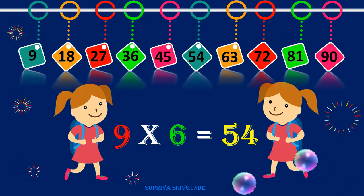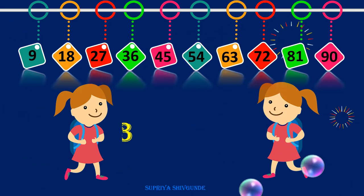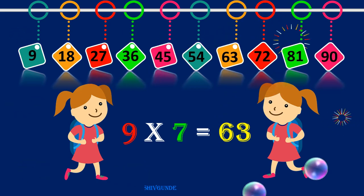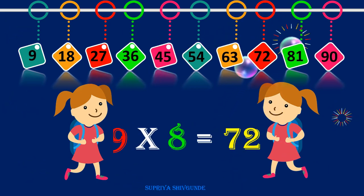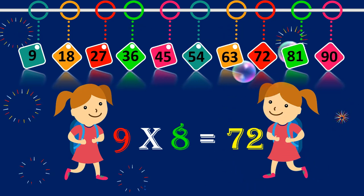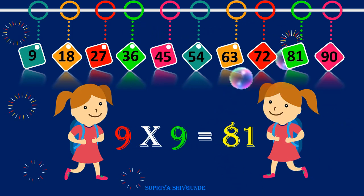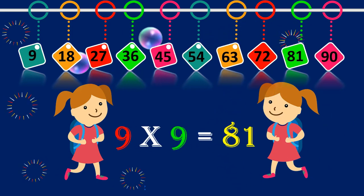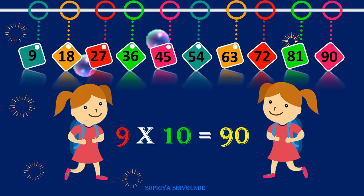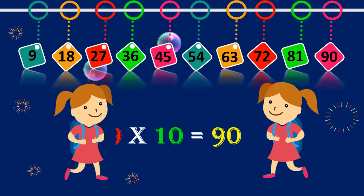Nine sixes are fifty-four. Nine sevens are sixty-three. Nine eights are seventy-two. Nine nines are eighty-one. Nine tens are ninety.